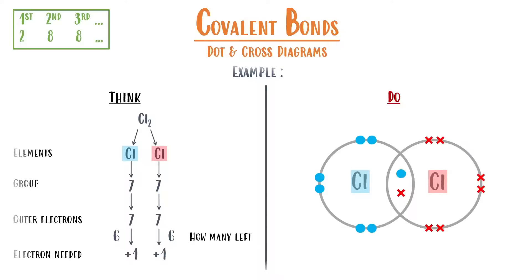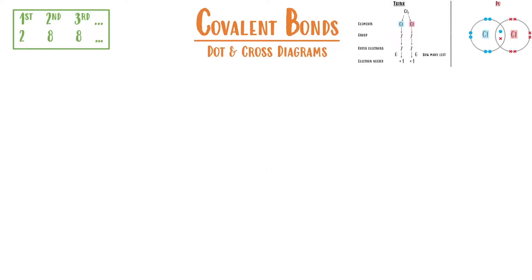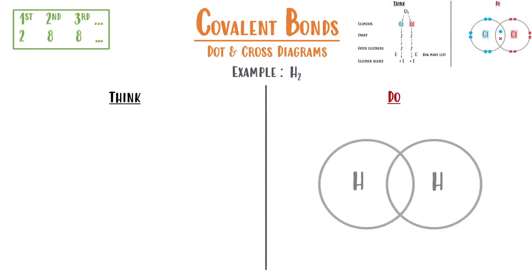Now that we've looked at an example, here's one for you to try — hydrogen. A hydrogen molecule consists of two hydrogen atoms and I've started you off by drawing the outer shells for both. Use the previous example in the top right hand side to help guide you when drawing your own. You have one minute to complete this example.